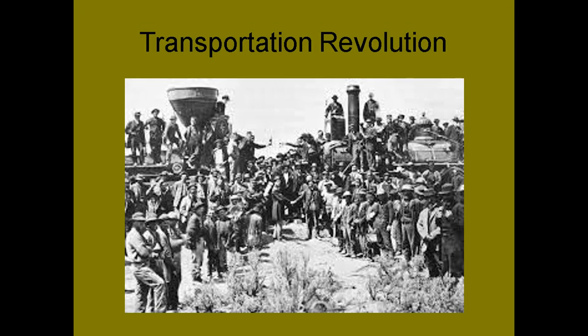Dramatic changes in transportation networks — the construction of roads, canals, railroads, and steam ships on rivers and lakes — led to the expansion of markets, because now people have the ability to move inland. These transportation networks facilitated the movement of people and goods and altered the physical landscape.